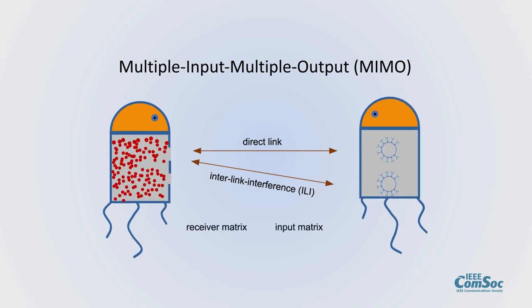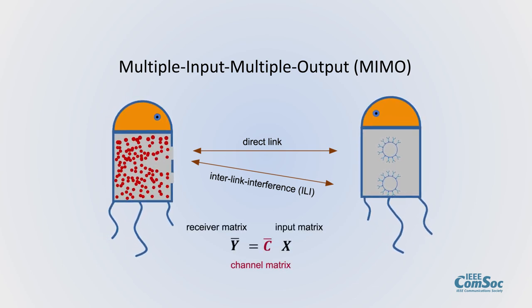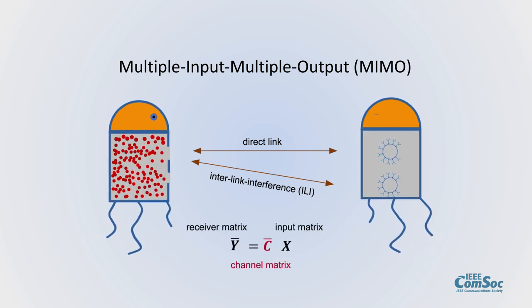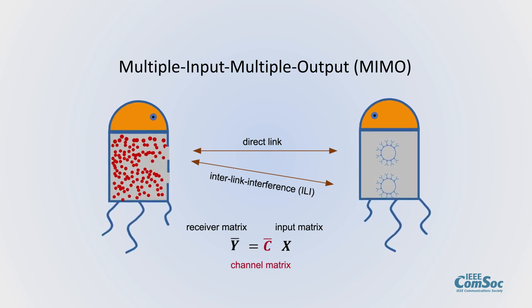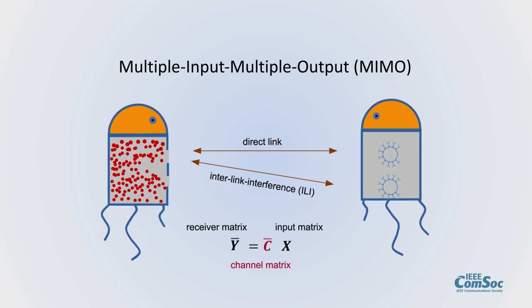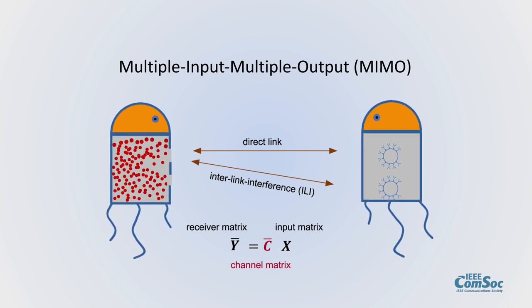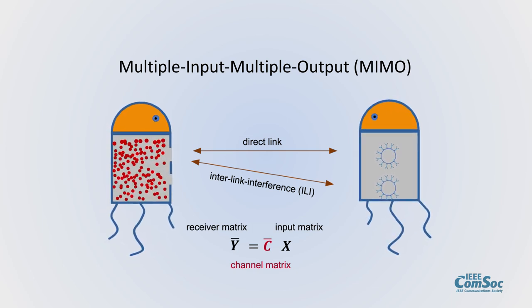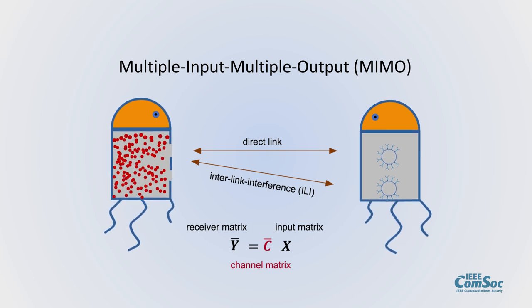The process is stochastic and the number of received molecules follows the Poisson distribution. Knowledge of the channel matrix is crucial for communication. So how do nanomachines estimate the channel?